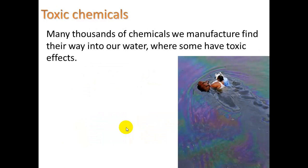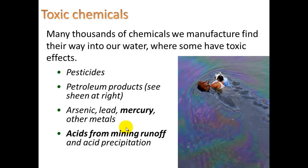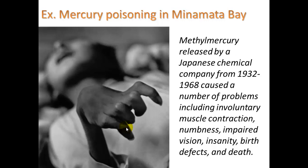As far as toxic chemicals go, many thousands of chemicals we manufacture find their way into our water, where some have toxic effects. We're talking about pesticides — we'll look into that more in our next unit on environmental health and toxicology. Petroleum products, arsenic, lead, mercury, and other metals. Heavy metal poisoning is a serious thing. And acids from mining runoff and acid precipitation — those are all toxic chemicals.